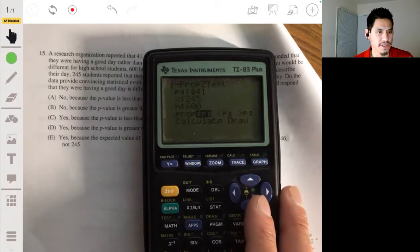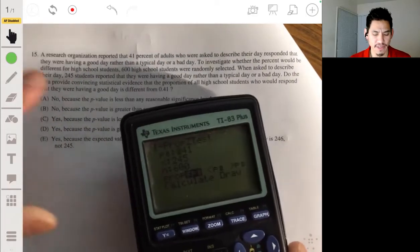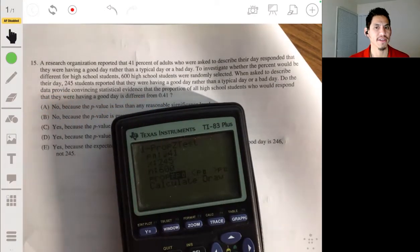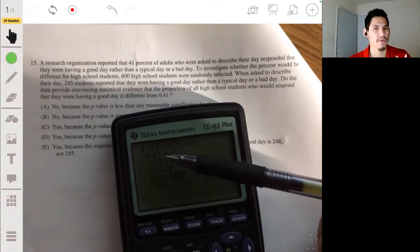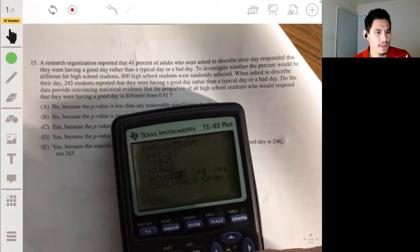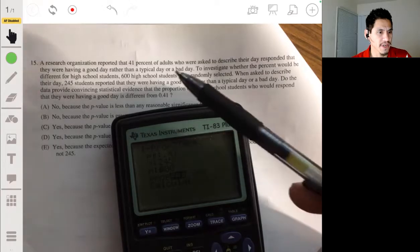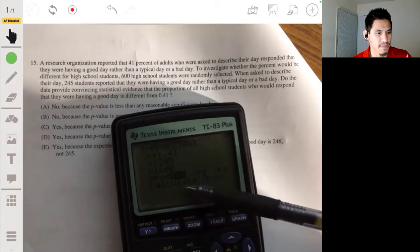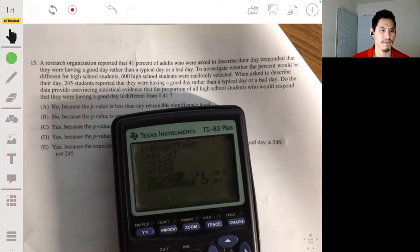So I already did this so you can see here. We want to see if the proportion of students that said they were having a good day is significantly different to that of adults, so the null hypothesis or our null proportion value p naught would be 0.41. And we have data, so our successes or the students that said they were having a good day is 245. Our sample size is 600, and we want to see if it's different. So we're going to pick a proportion not equal to it, because we're not looking for less than or greater than, and we just calculate this.